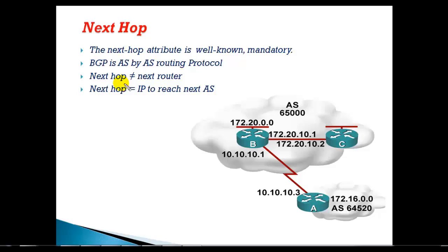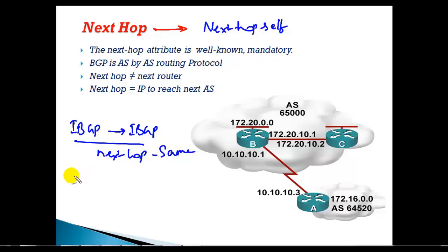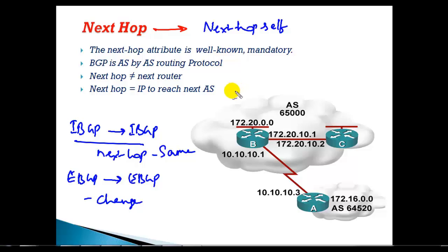The next well-known mandatory attribute is next hop. We've already discussed next hop behavior in detail in previous videos. By default, when an IBGP router sends an update to another IBGP router, it does not change the next hop — the next hop remains the same as set by the EBGP peer. When sending updates to EBGP, it does change or add the next hop address.